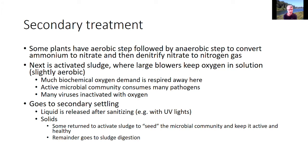As the organic carbon is brought down and pathogens decreased, the effluent goes to secondary settling. The liquid is released after settling, when solids fall out. That liquid can be treated before going into a river, lake, or the ocean — some communities dump it into the ocean — using ultraviolet lights. Some solids are returned to the activated sludge to seed the microbial community and keep it active and healthy, fortifying the microbial community and preventing washout. The remainder goes to sludge digestion.